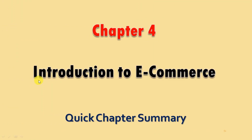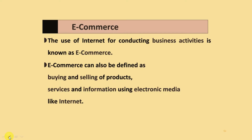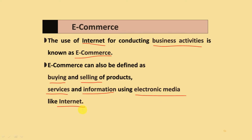Chapter 4 is an introduction to e-commerce. E-commerce is the use of the internet for conducting different types of business activity. It is known as electronic commerce and can also be defined as buying and selling of different products, services, and information by using electronic media like the internet.